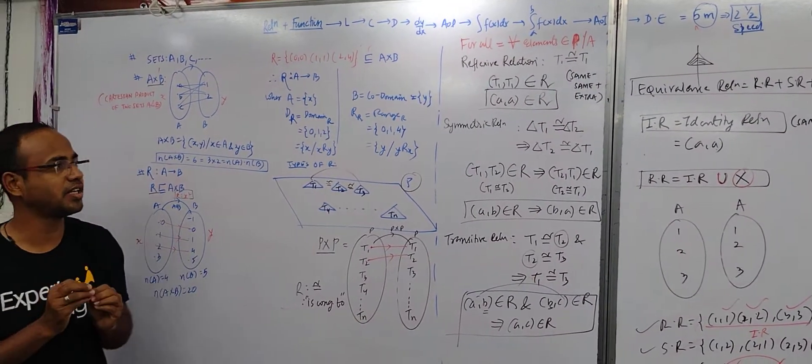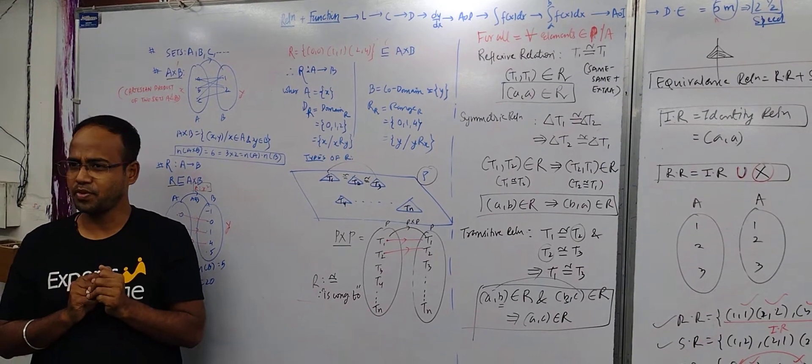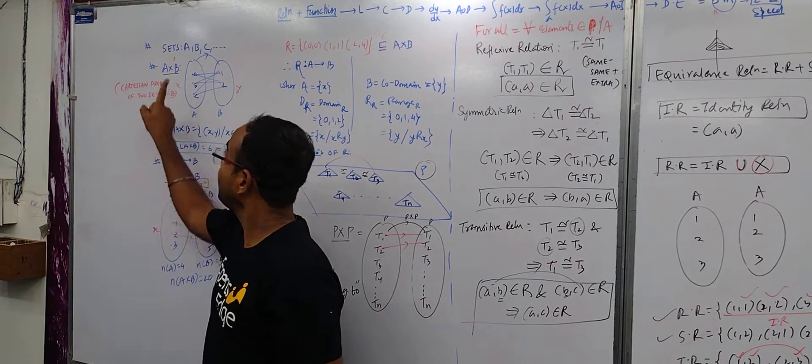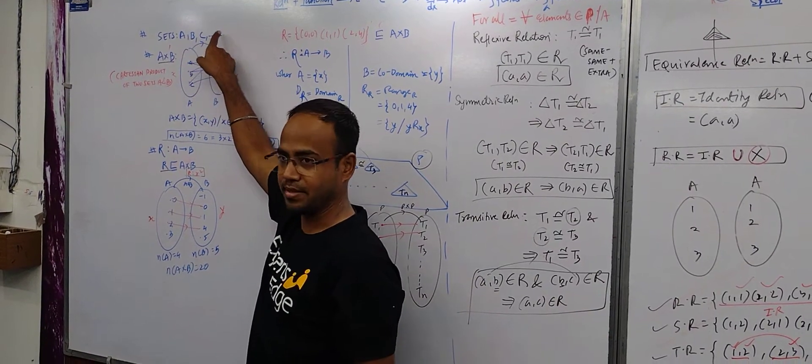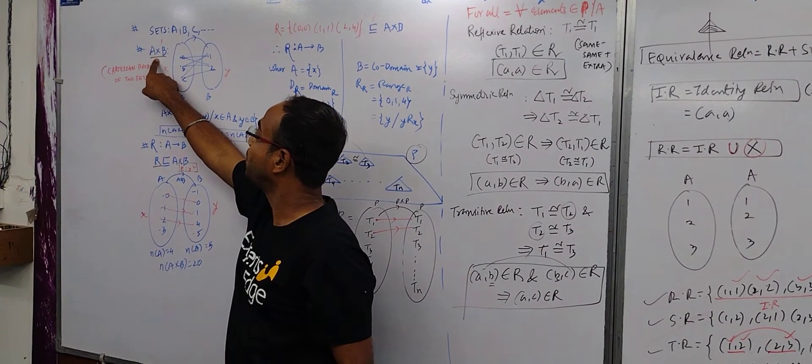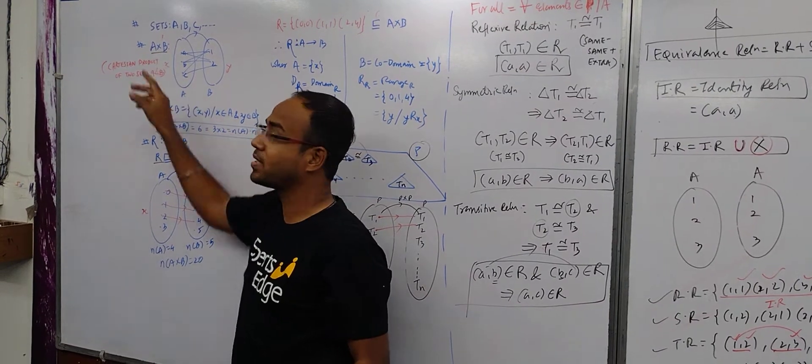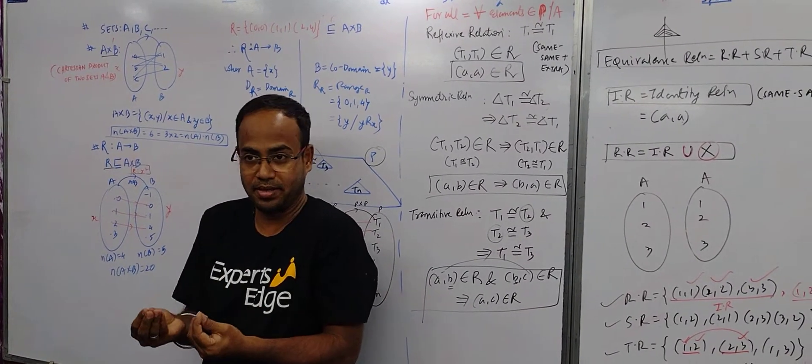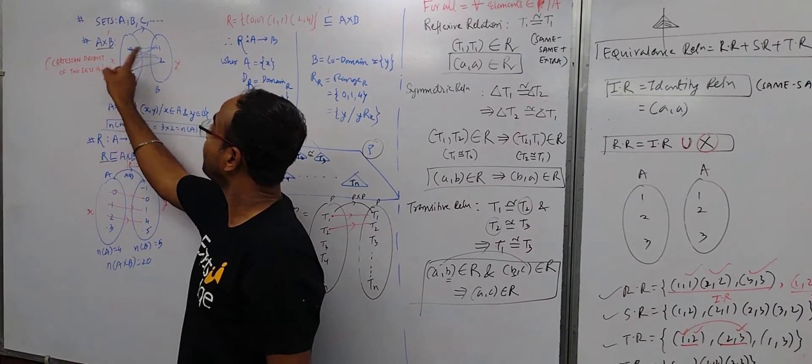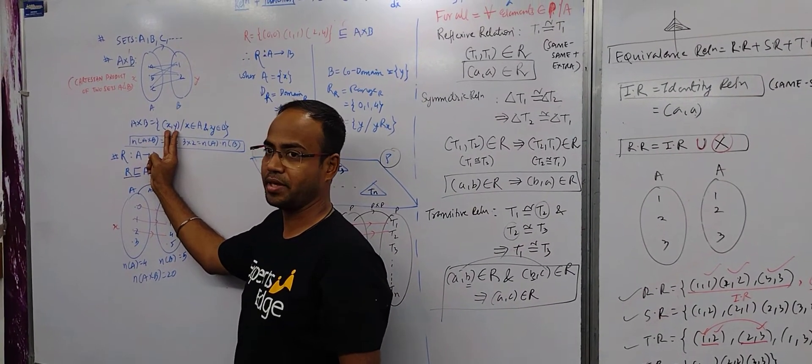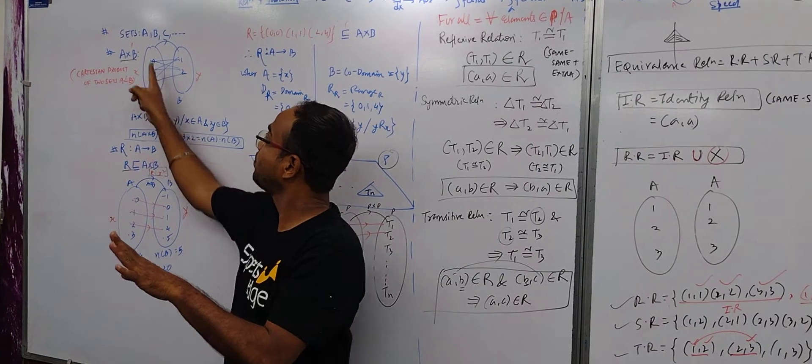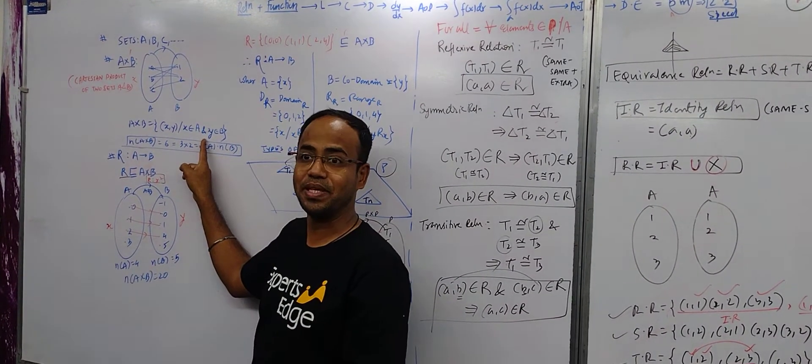So let us see relation in just maximum three minutes. What is relation? Before that we know sets are known as capital A, B, C. Before relation comes a very famous thing A cross B. A cross B means ordered pair. So what is ordered pair? A with element 1, A with element 2, B with element 1, B with element 2. Ordered pair X, Y where X belongs to A and Y belongs to B.